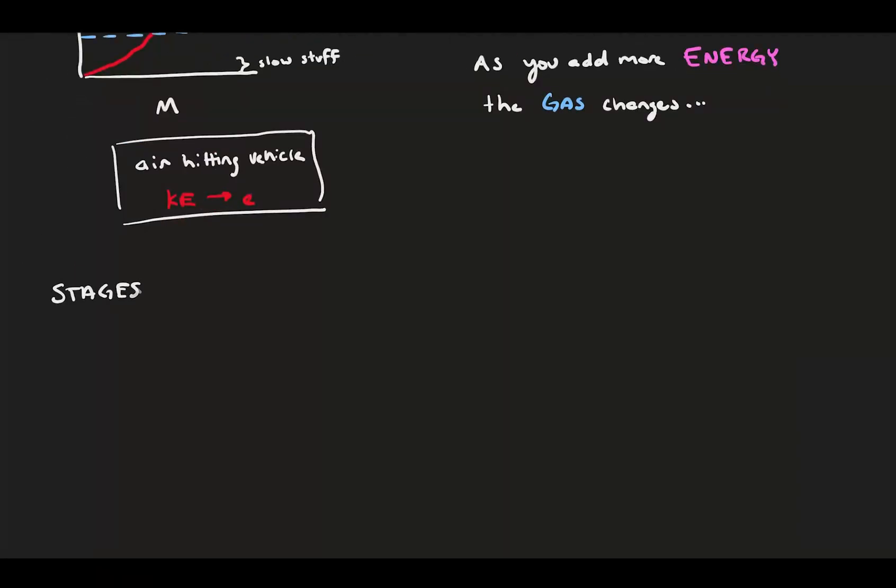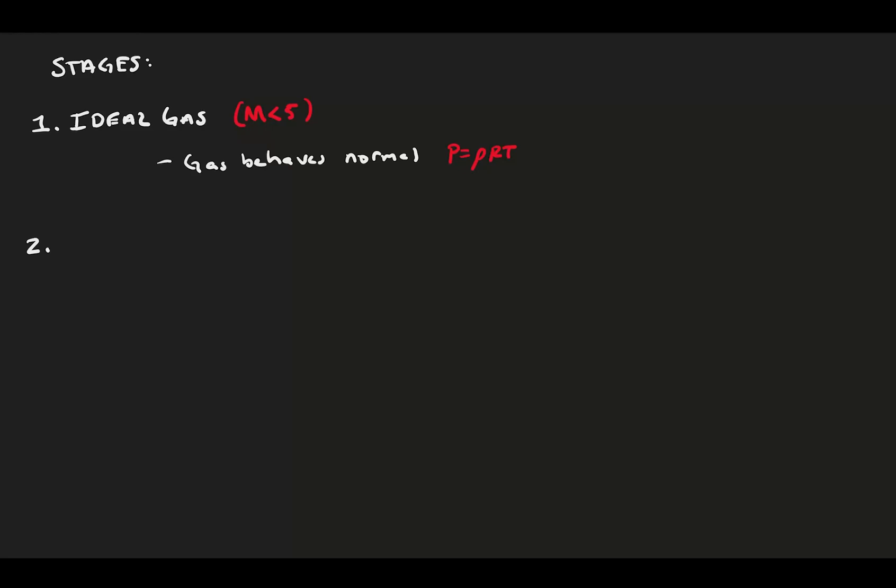This all happens in stages of increasing energy. The first stage is the most familiar. Flow can be compressible, but behaves like an ideal gas. This means we can use a lot of our thermodynamics tools we've learned. As we go faster, we add kinetic energy.